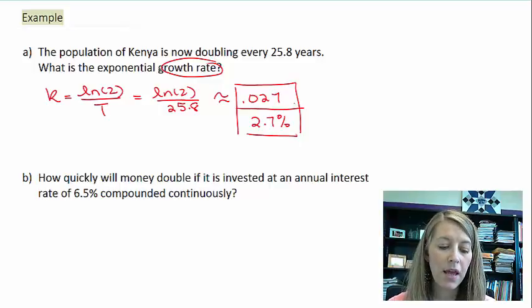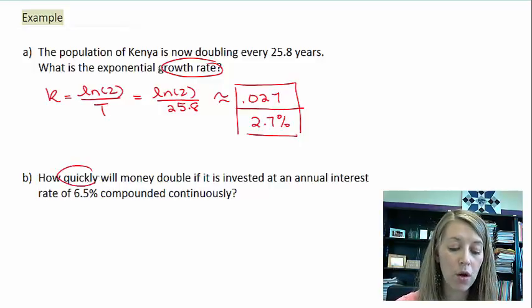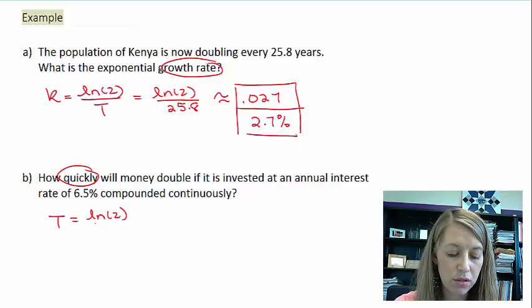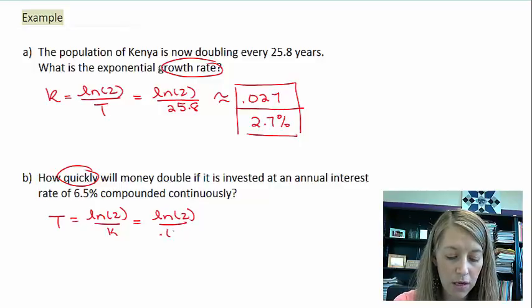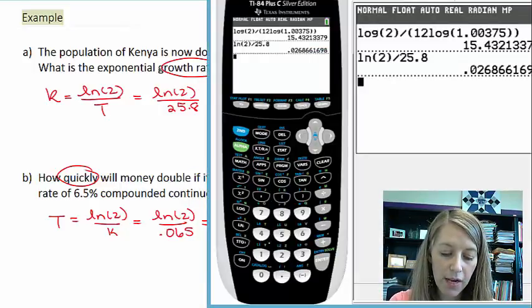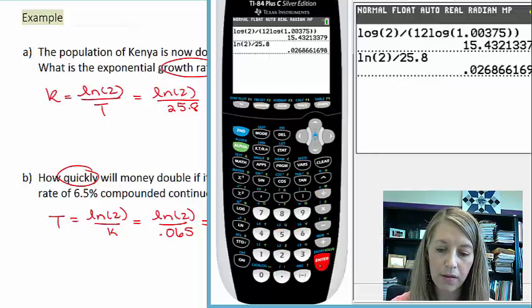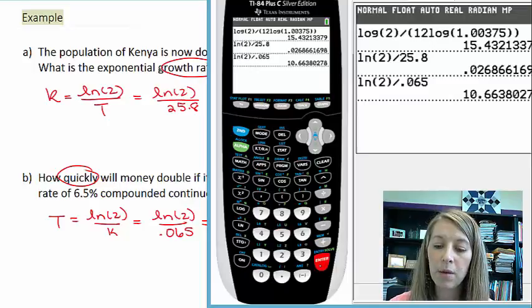A different question that's basically asking the same thing is how quickly will money double if it's invested at an annual interest rate of 6.5% compounded continuously? This one wants to know time. So the time version of that is ln(2) divided by k. All I need to do is plug in our k value in decimal format and then plug that into our calculator. ln(2) divided by 0.065. So it's going to take me approximately 10.66 years to double.